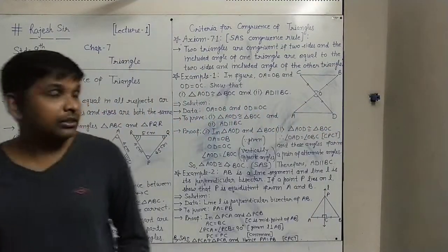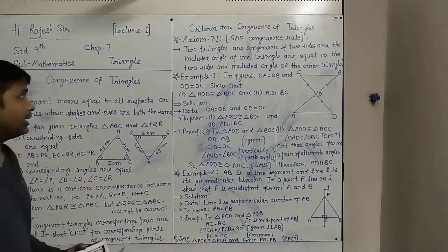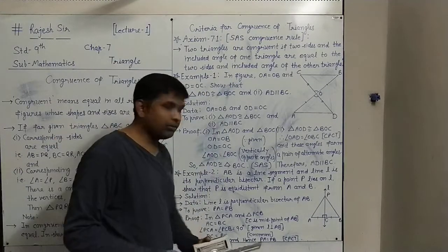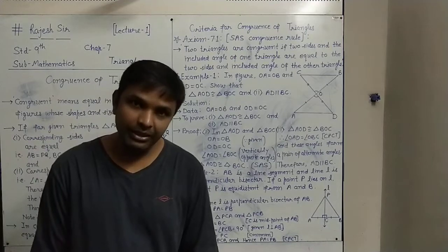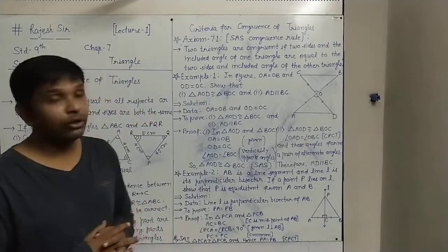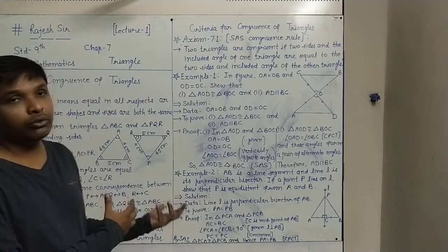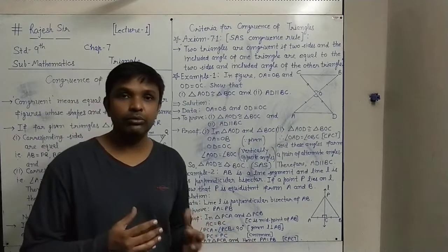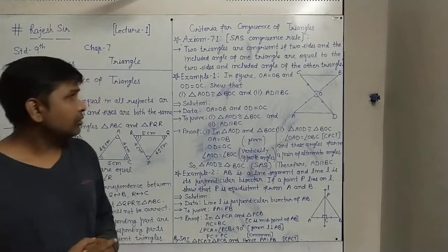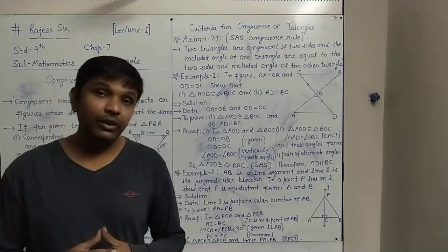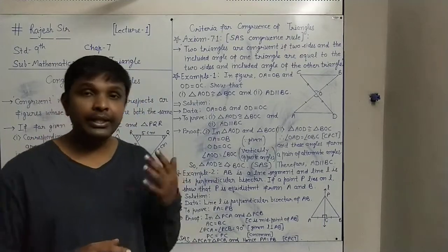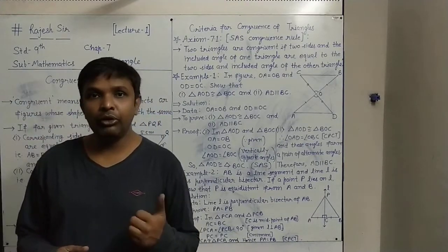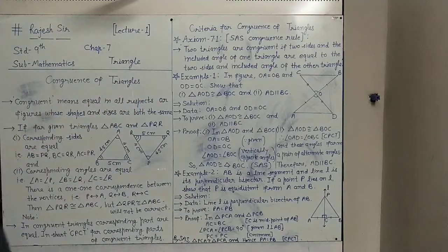So in this lecture we have understood the definition of congruence of triangles, and Axiom 7.1 — the SAS congruence rule — and applied this rule in Example 1 and Example 2. You are suggested to write this in good handwriting in your notebook, understand the definition of congruent triangles and the SAS rule, and be confident in this concept. This will be used in upcoming examples as well. Thank you.